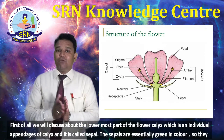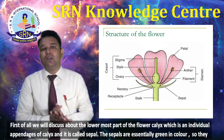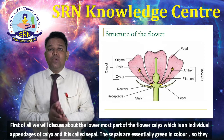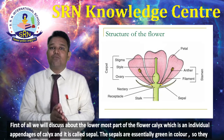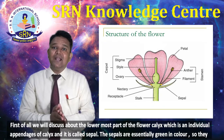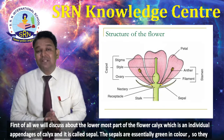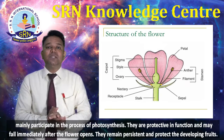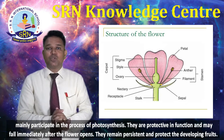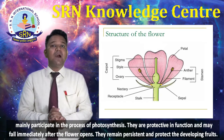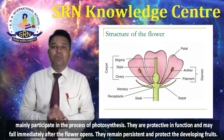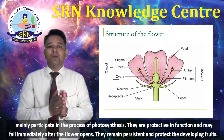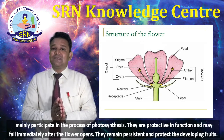First of all, we will discuss the lowermost part of the flower called the calyx. The individual appendages of calyx are called sepals. Sepals are essentially green in color, so they mainly participate in the process of photosynthesis. They are protective in function and may fall immediately after the flower opens, or they remain persistent.